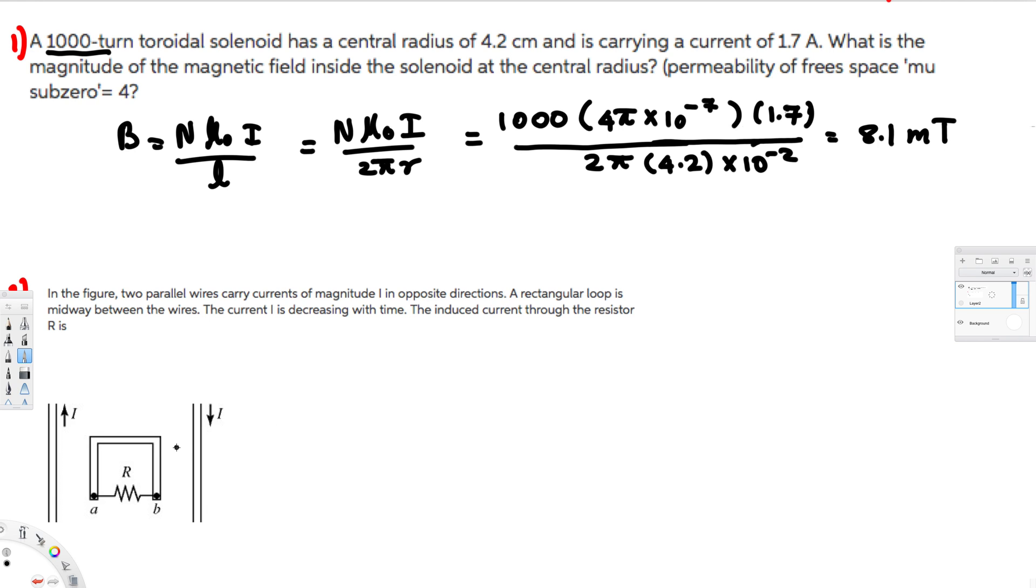Now let's do the second question. The figure shows two parallel wires carrying currents of magnitude I in opposite directions. A rectangular loop is midway between the wires. The current is decreasing with time. The induced current through resistor R is what? They are asking which way the induced current in this loop will go - will it go through A to B or B to A?